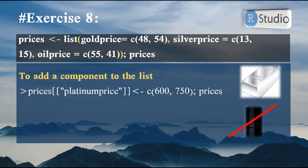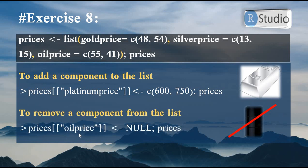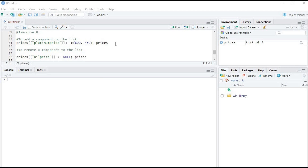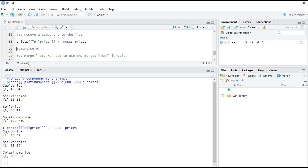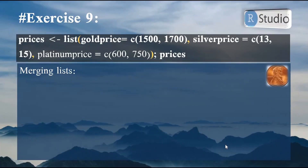In exercise eight we learn how to add or remove elements. To add an element, write list_name[['element name']] and assign a vector of values — here we add 'platinum price' with 600 for March and 750 for April. To remove an element, write list_name[['oil price']] and assign NULL to it. Running the add command shows gold price, silver price, oil price, and the new platinum price. Running the remove command confirms oil price is gone.